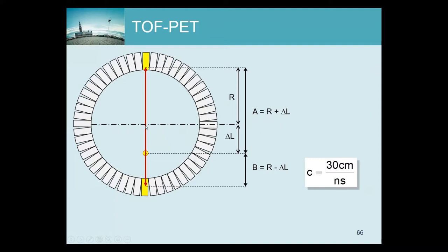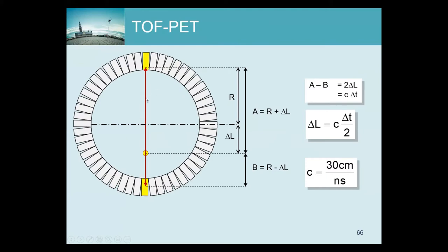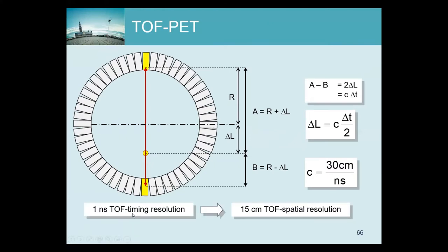If the source were in the middle, the photons would arrive at the same time. If we move the source a distance delta L, then one photon covers delta L less and the other covers an additional delta L — a difference of 2 delta L, giving a factor of 2. So the spatial uncertainty equals the time uncertainty times the speed of light divided by 2. With one nanosecond time-of-flight resolution, we get 15 centimeters spatial resolution, since 30 divided by 2 is 15.